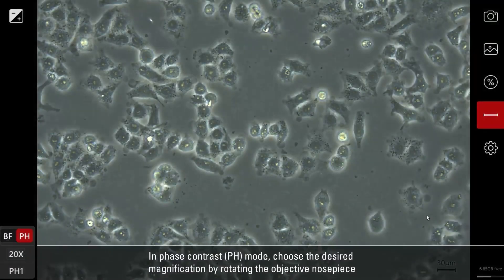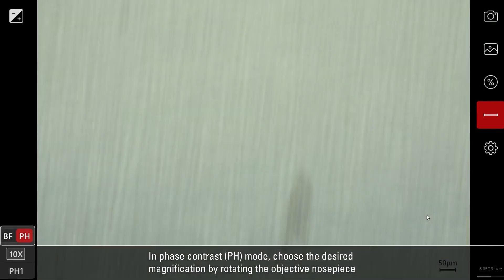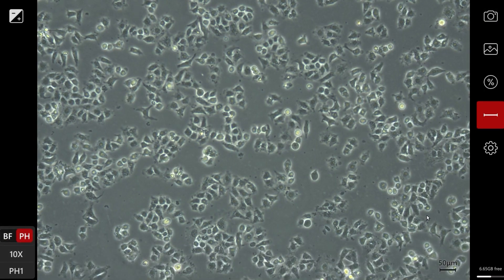In phase contrast or PH mode, choose the desired magnification by rotating the objective nose piece.